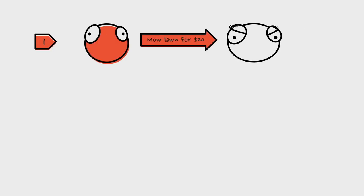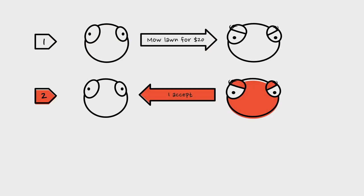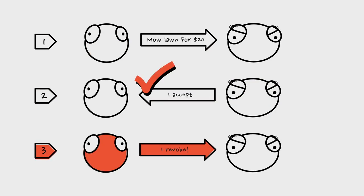What if it unfolded differently? If we've got the offer to mow the lawn, then Barb accepts, and then Bob attempts to revoke — that acceptance would be valid and the revocation invalid, because Bob has to revoke before the offeree Barb accepts. He didn't do that here, so this would be a failed revocation.